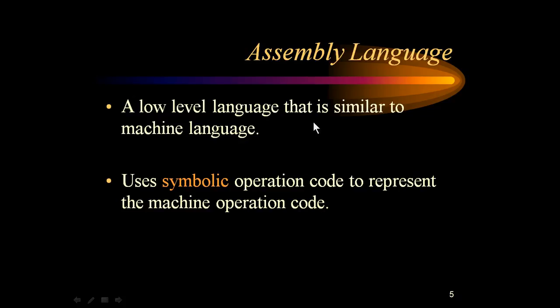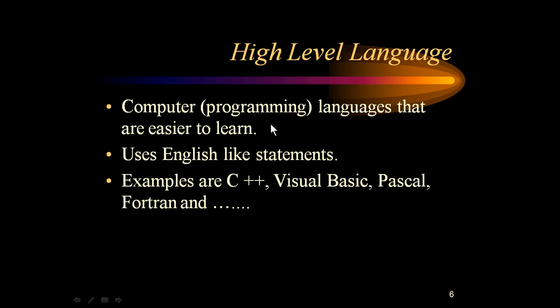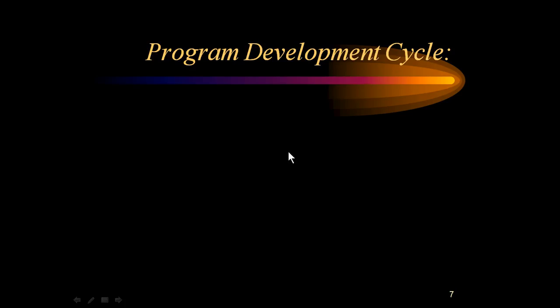Assembly language is a low-level language similar to machine language. It uses symbolic operation codes to represent machine operation codes. High-level languages are programming languages that are easier to learn and use English-like statements. Examples include C++, Visual Basic, Pascal, Fortran, C, C#, and Java, to name a few.